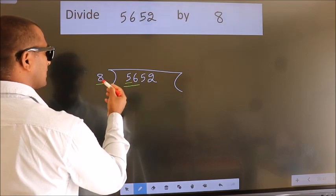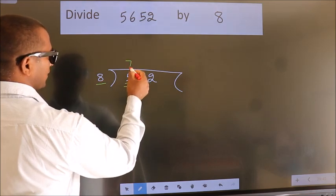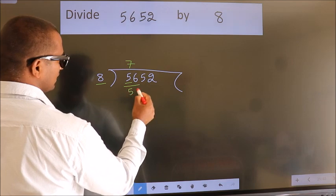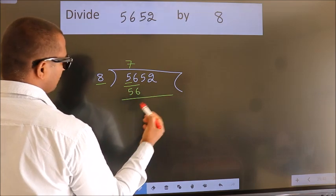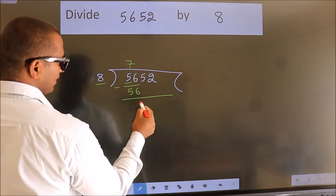When do we get 56 in 8 table? 8 7's 56. Now we should subtract. We get 0.